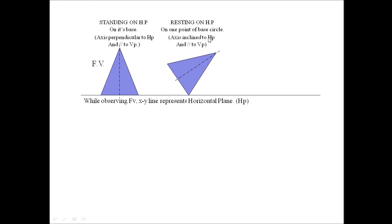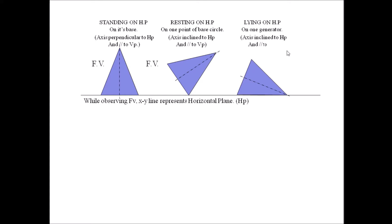In that case, this becomes a limitation for us. We have to keep that particular part on XY. Whatever the inclination given, we have to go according to that. In some statements, they may give us that a line is on HP. One generator of either a cone or cylinder may be lying on HP.